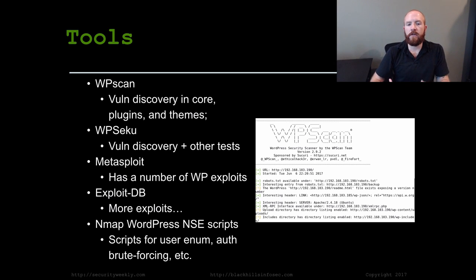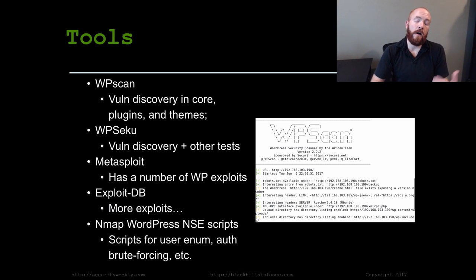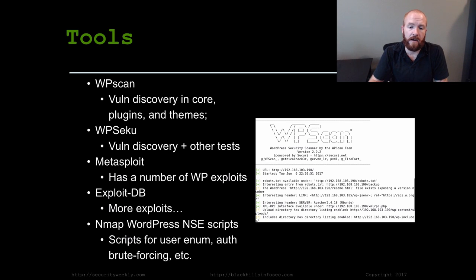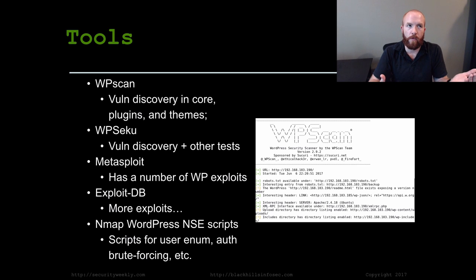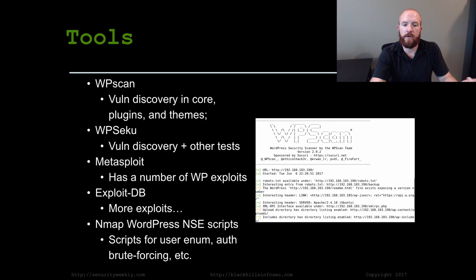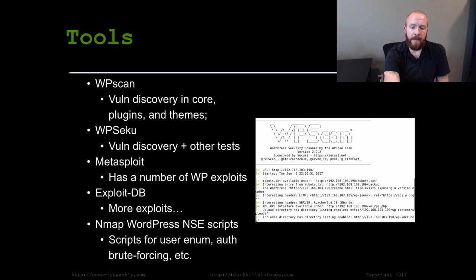Metasploit: after you've found a vulnerability — let's say you've scanned a site with WPScan and you now have a potential list of plugins and vulnerabilities associated with those versions — you go over to Metasploit and try to cross-reference the various plugins and vulnerabilities that actually have exploits available in Metasploit. ExploitDB is another one; there are a ton of vulnerabilities not in Metasploit that are in ExploitDB, because a lot of times the exploit for WordPress is just a URL-based, parameter-based exploit. And nmap actually has a few NSE scripts as well for performing different attacks against WordPress, including user enumeration and brute force authentication attempts.